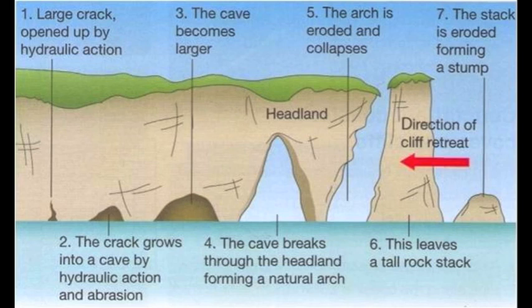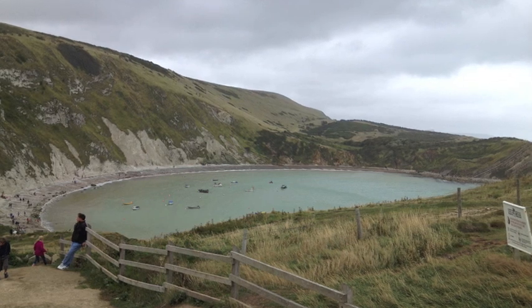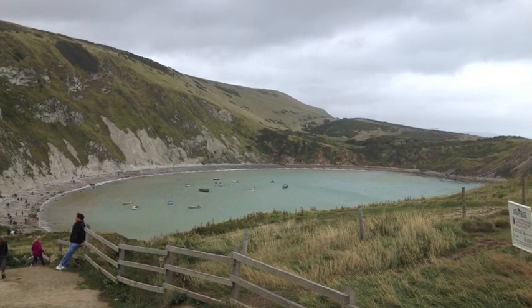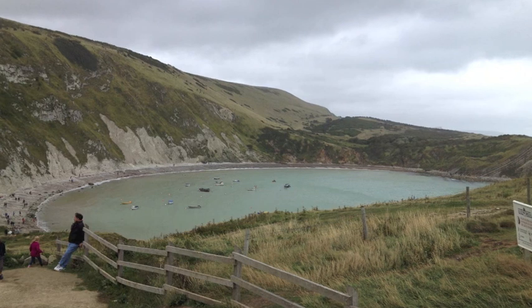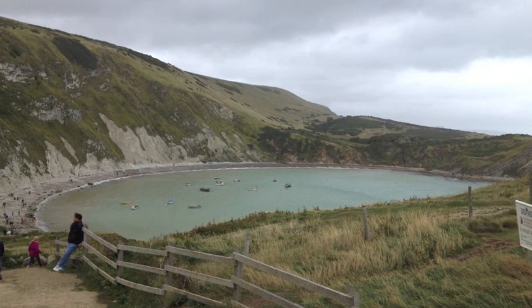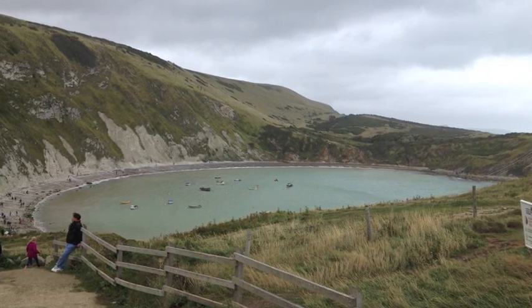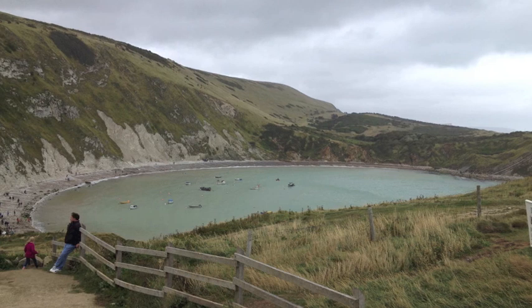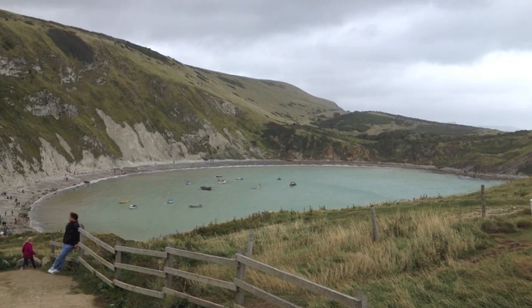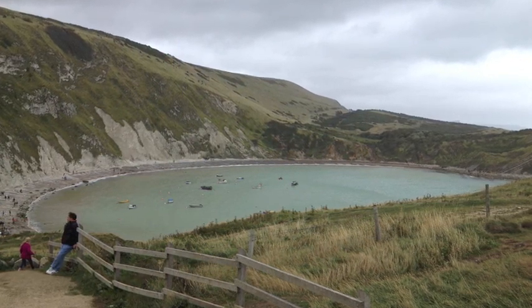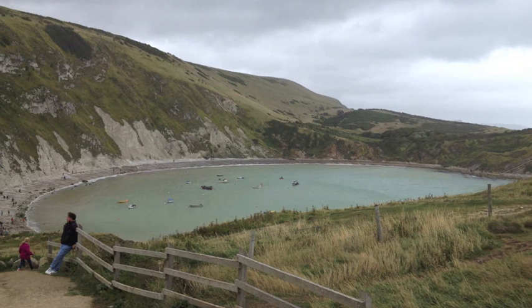The Jurassic Coastline in South Dorset is an ideal case study to learn because it contains so many examples of different types of landform. Erosional landforms include bays and headlands, and all the associated features found on a headland such as cracks, caves, arches, stacks, and stumps, together with wave-cut notches and platforms.